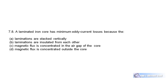Question 7.8: A laminated iron core has minimum eddy current losses because the laminations are insulated from each other. It wouldn't work if those metal laminations didn't have insulation between them — so B is the correct answer.